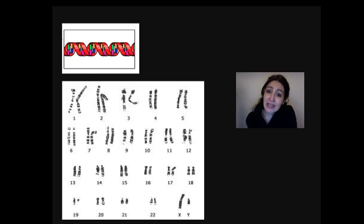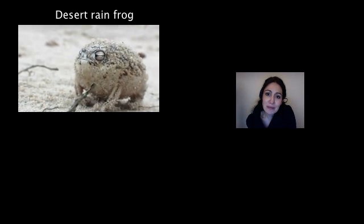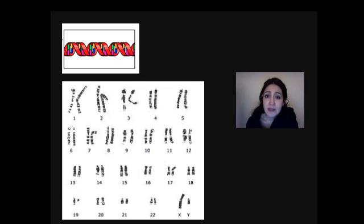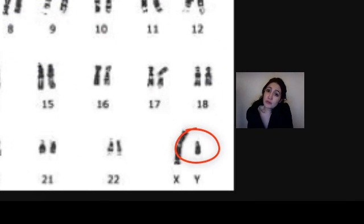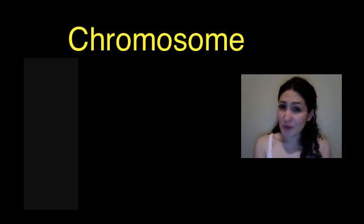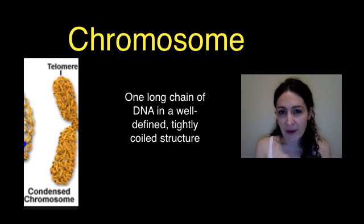Scientists often wait until cells are in mitosis so that they can start counting the chromosomes in each species. If they were curious to find how many chromosomes existed in, say, a frog, they would take frog embryos, look under a microscope, and once those eggs were in mitosis they could count individual chromosomes. Chromosomes are characterized so that the larger chromosome is chromosome one and the smallest chromosomes end up at the very end of the count. The term chromosome simply means one long chain of DNA in a well-defined, tightly coiled structure.